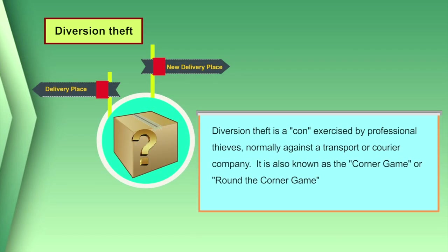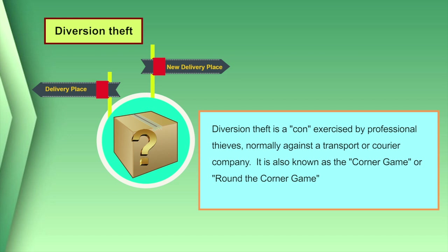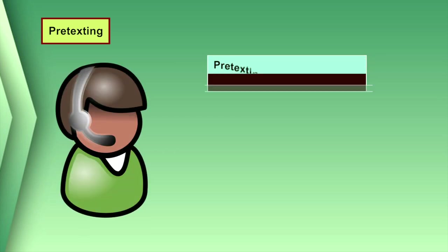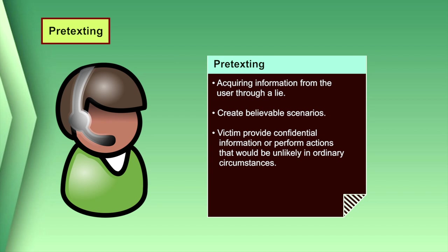The third technique is diversion theft, used mostly with thefts but still considered a social engineering method. The purpose is to convince a legitimate delivery person to deliver a package to a different address, usually around the corner. The fourth technique is pretexting — an act of creating and using an imaginary scenario to engage a target victim in a manner that increases the chance the victim will reveal information or take an action unlikely in ordinary circumstances. Be cautious because strangers may try to fool you by creating false situations to collect confidential information.